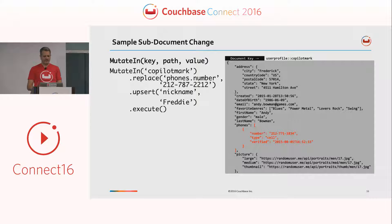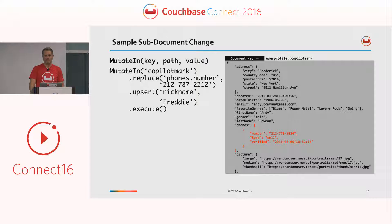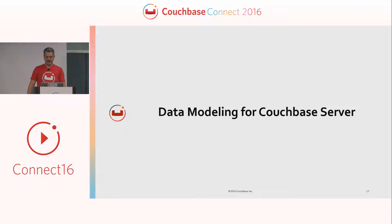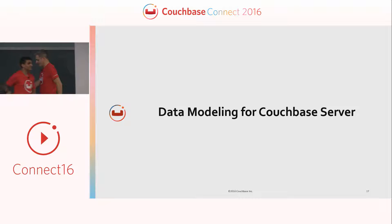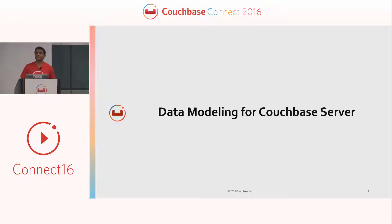That's pretty much it on the sub-document API side. If you haven't upgraded to 4.5 and you want these features, it's time to do it. Watch for the data structures API when it gets released in the 4.6 timeframe with the main Couchbase release. I'm going to hand over next. We're going to talk about data modeling, and it's over to Clarence. Tyler discussed the data structures and I'll be discussing the data modeling.